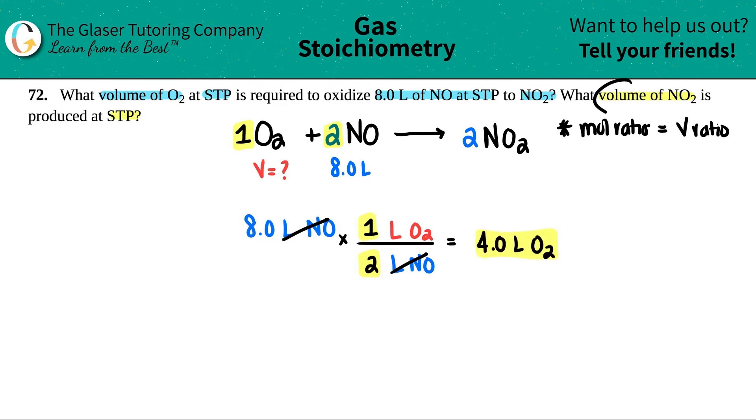Now the second question says, what's the volume of NO2 at the same temperature and pressure? They're all at STP. So we could do the same thing. I guess I'll start with the NO. 8.0 liters of NO. It's always good to start with the number that they gave you, because if you accidentally got this incorrect, you don't want to perpetuate another incorrect value. So always just start again with what they gave you.